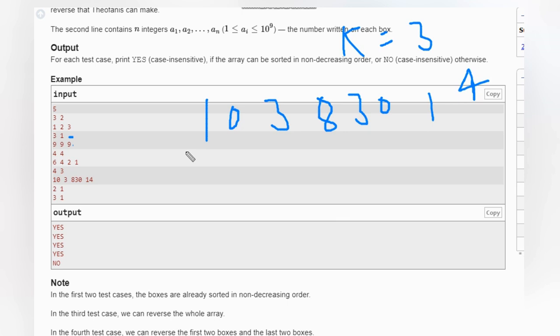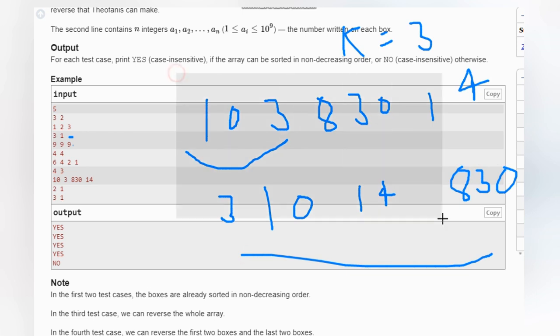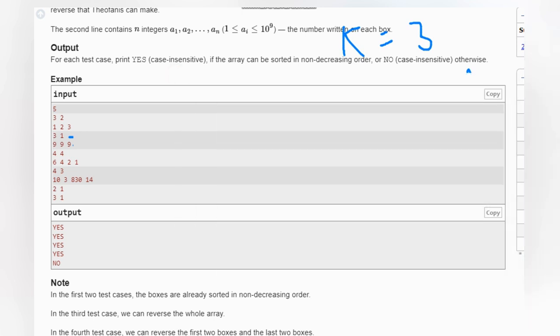We can take a subarray of length 2 and reverse this, so it will become 3 and 10. If we again take this, then the array becomes 3, 8, 10, 30, 40, so the array becomes sorted now. It's possible.